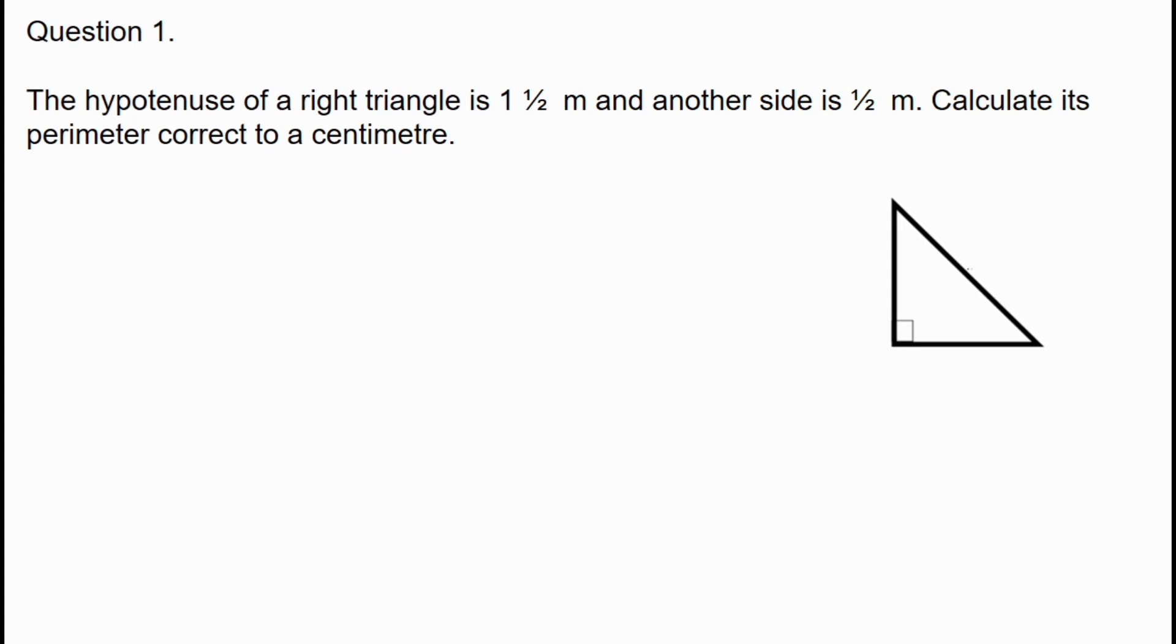One right angle triangle is one and a half meters and the other side is half a meter. So if we take the third side length, we will take the perimeter to a meter, to a centimeter.